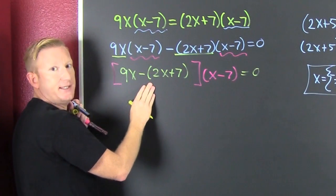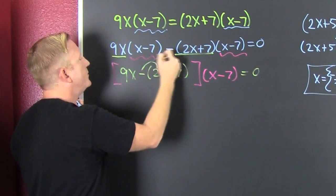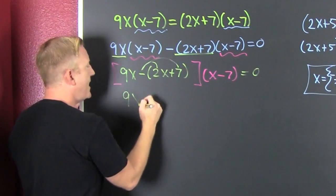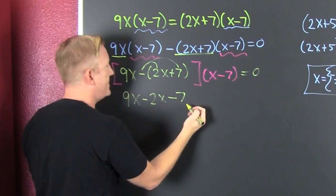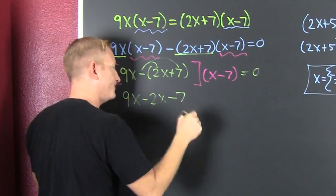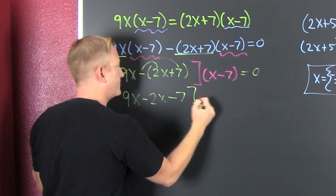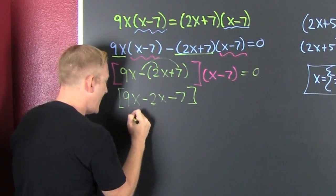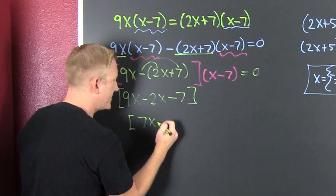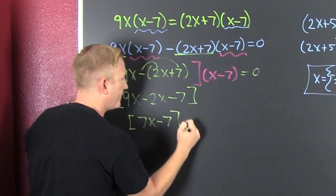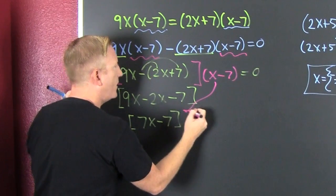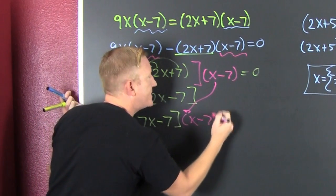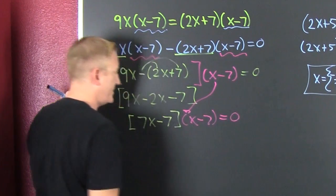Now I can set them all equal to zero, but let me just clean this up. That's a 9x minus 2x and then that's a minus 7. A little bit further - that's a 7x minus 7, and then I'm going to bring this guy on down, that's an x minus 7. And then that's equal to zero.